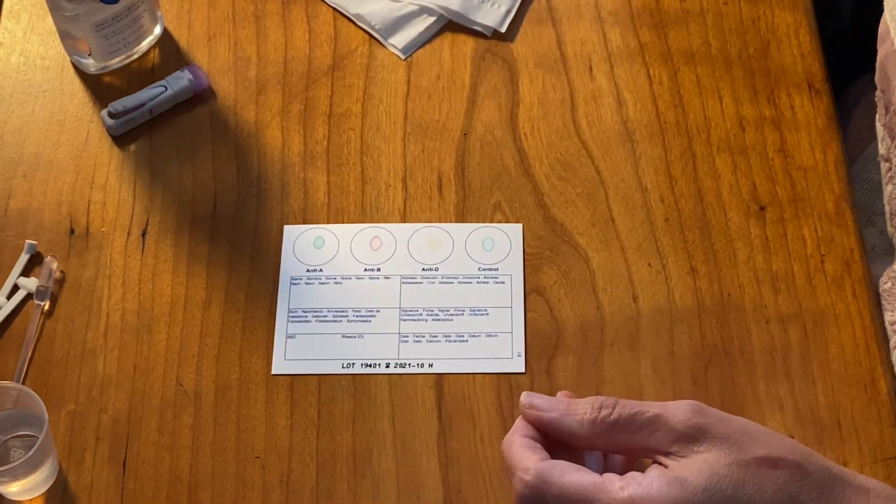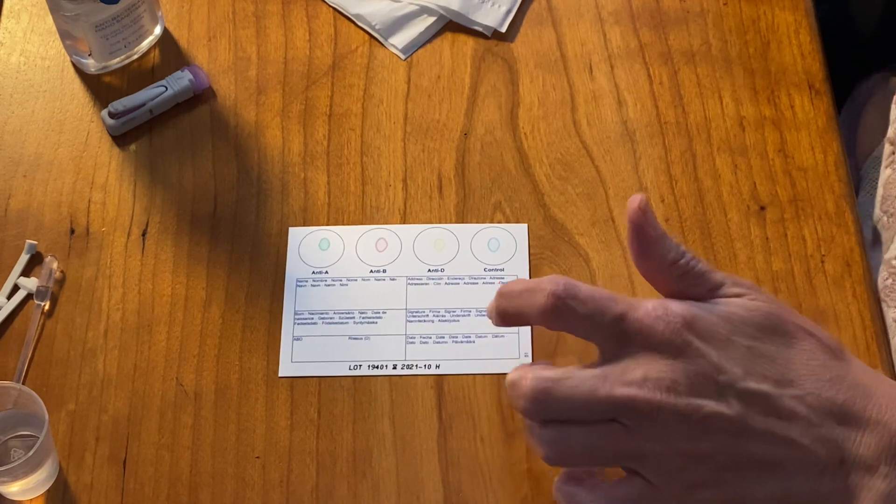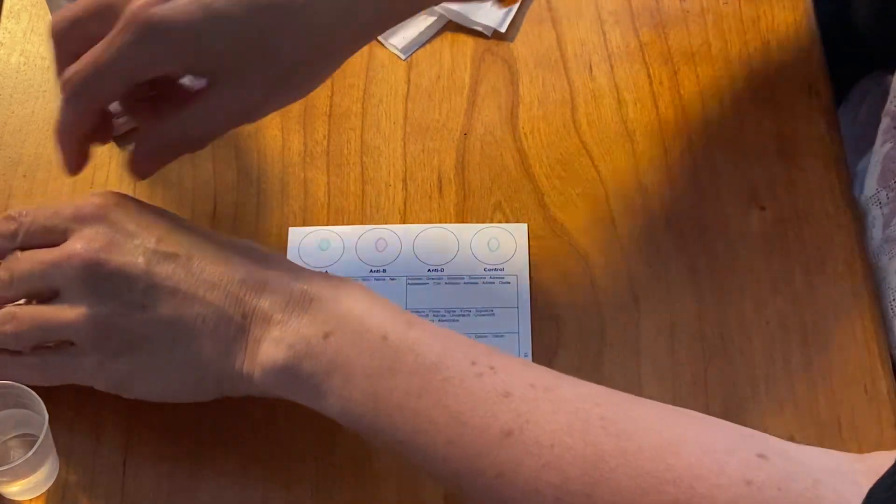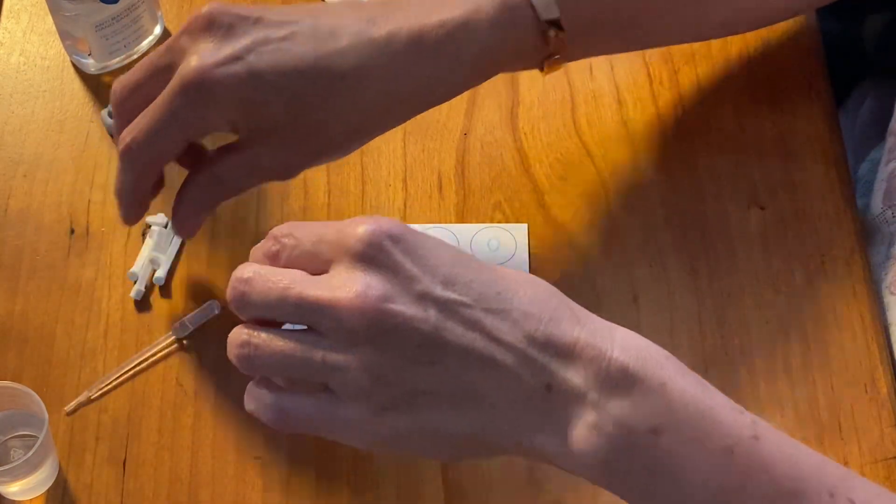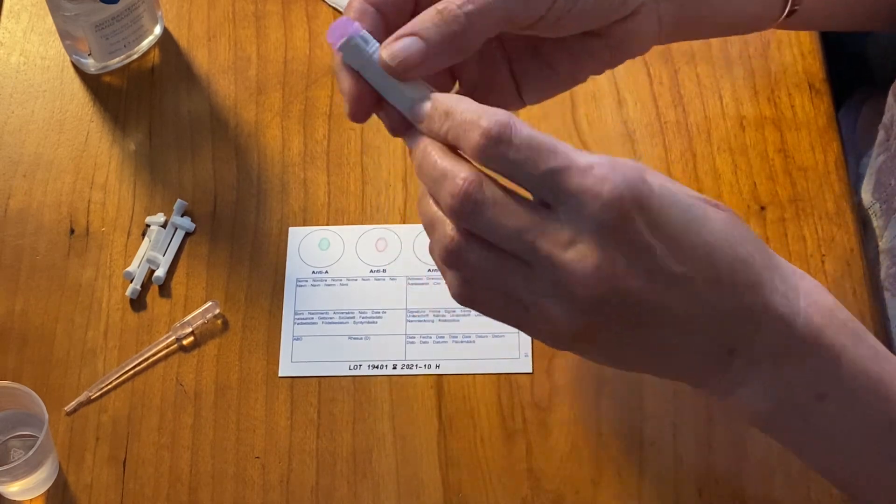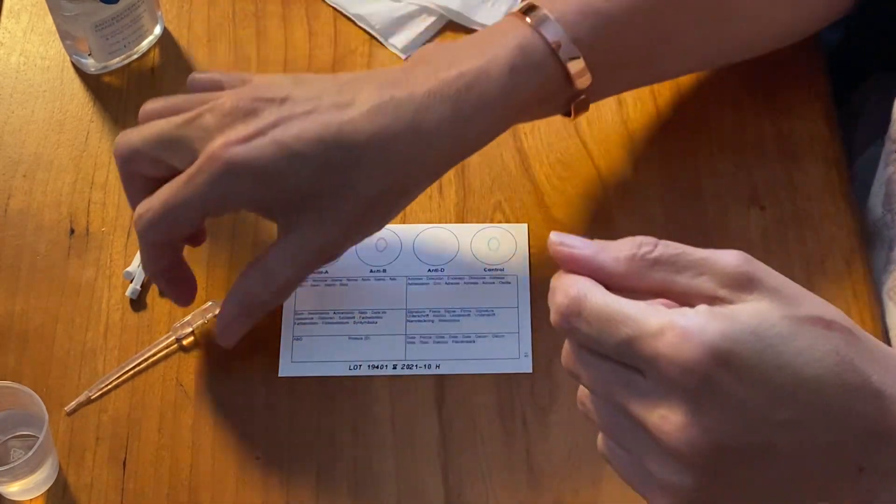So this is how you're going to do it. In this package you will get your Eldon card, a cleansing swab to clean your finger, the Eldon sticks which we will use in a minute, an automatic lancet that punctures your finger, and a plastic dropper.